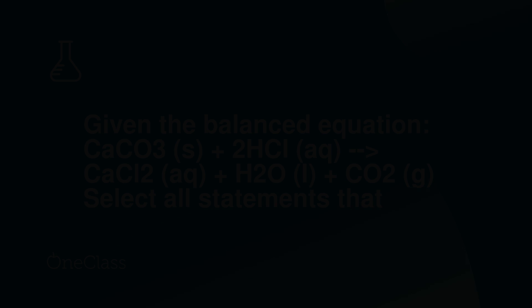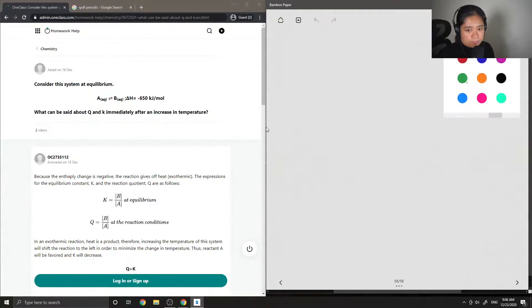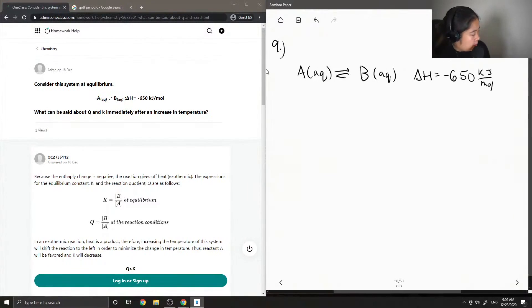Okay, so question 9, consider this system at equilibrium. So we have A plus B, oh wait, A is in equilibrium with B, and its delta H value is equal to negative 650 kilojoules per mole. And then the question asks, what can be said about Q and K immediately after an increase in temperature?